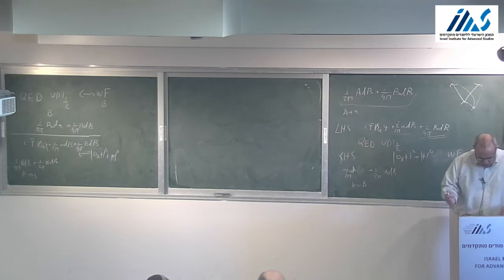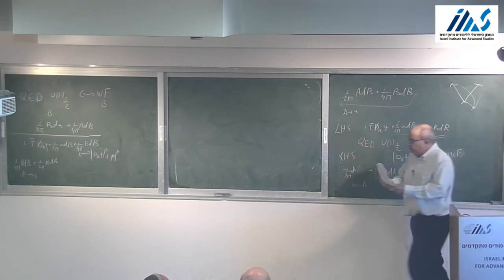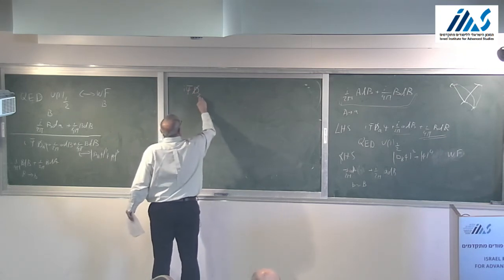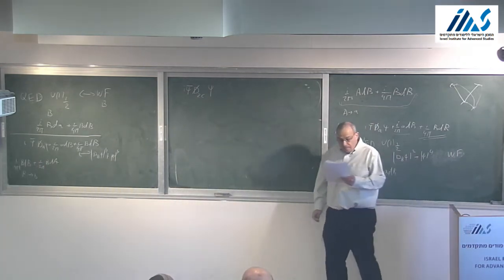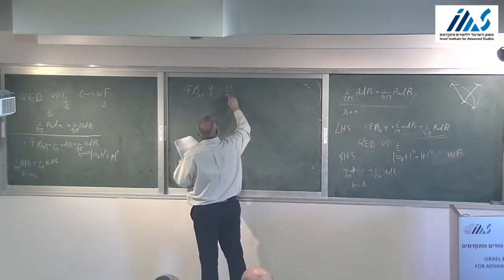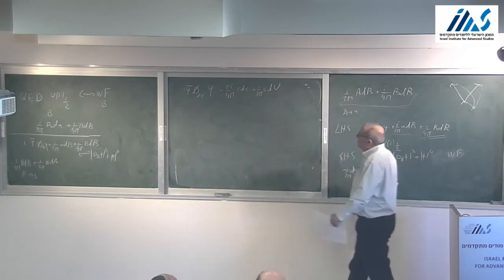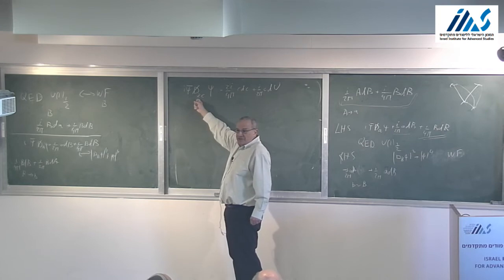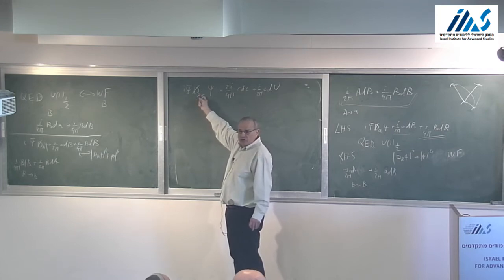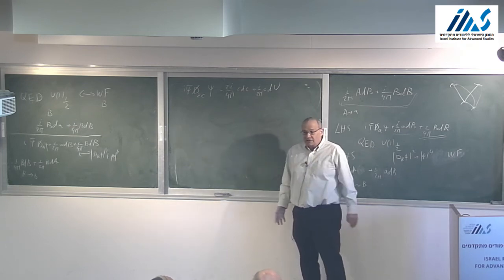The theory I'm interested in is U(1) with charge 2 — this is work done with two fantastic collaborators, Clay Córdova and Po-Shen Hsin. Using the same notation, the theory is I psi-bar D-slash-2c psi — QED with charge 2 — plus 2I over 4 pi c dc for the Chern-Simons term, plus I over 2 pi c dU where U is a background field. I chose the coefficient minus 2 here because with this coefficient I preserve time reversal symmetry — a fermion with charge 2, as it stands, does not preserve time reversal, but there is a choice of Chern-Simons term that adjusts this. So this theory is time reversal invariant.